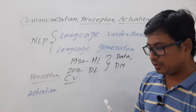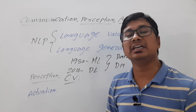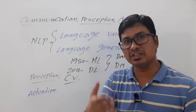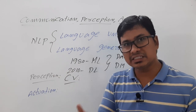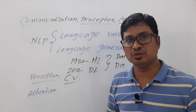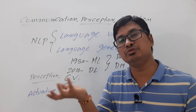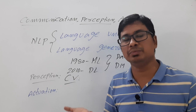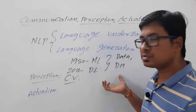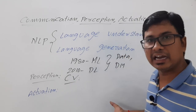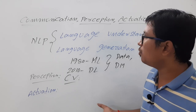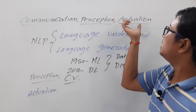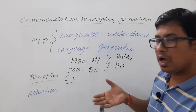Coming to actuation — actuation is nothing but performing an action. We design robots to perform actions, and for this we use reinforcement learning. Even in reinforcement learning we use large amounts of data and data modeling. So communication, perception, and actuation all involve large amounts of data and data modeling.